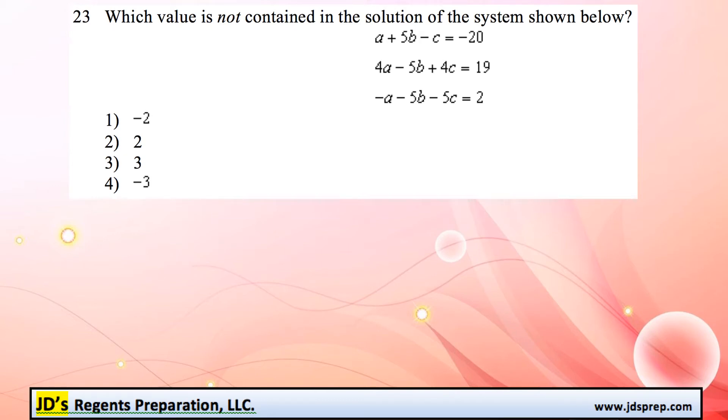This is question number 23 from the August 2016 Algebra 2 exam. In this problem we're going to solve this system of equations and figure out which one of the four values given is not one of the solutions.